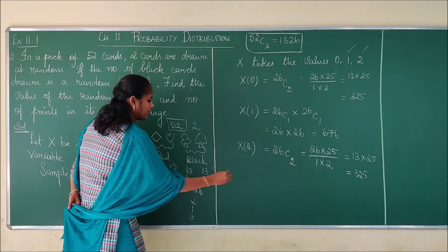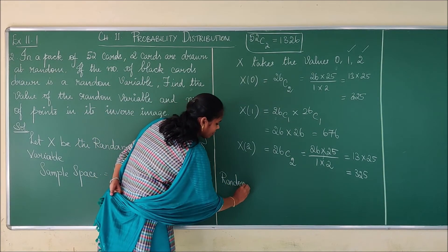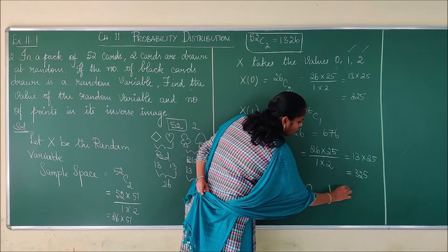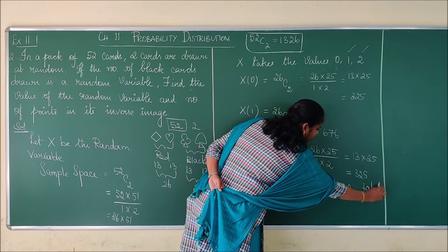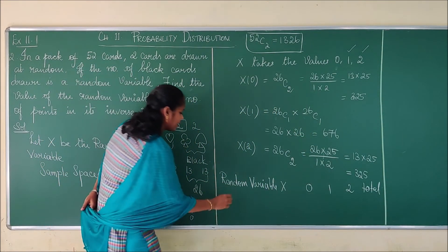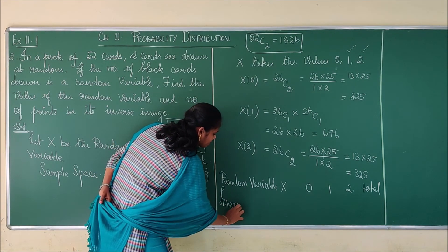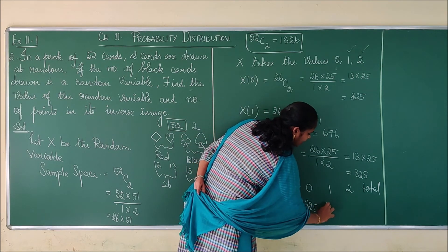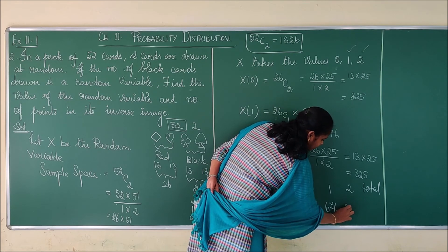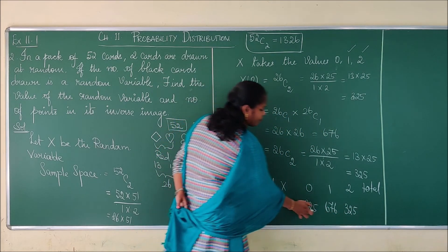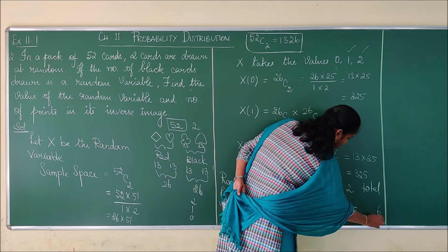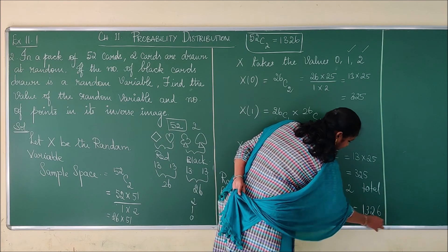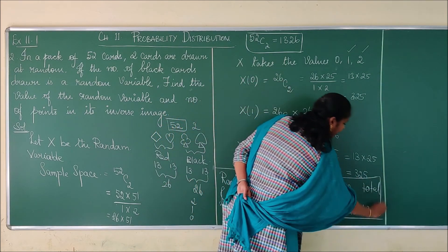Now I am giving a table. Random variable x takes values 0, 1, and 2. The number of points in the inverse image are 325, 676, and 325 respectively. Adding these up: 325 + 676 + 325 = 1326. This total equals the sample space value of 1326, which confirms our answer is correct. This is the inverse image of the random variable x for values 0, 1, and 2.